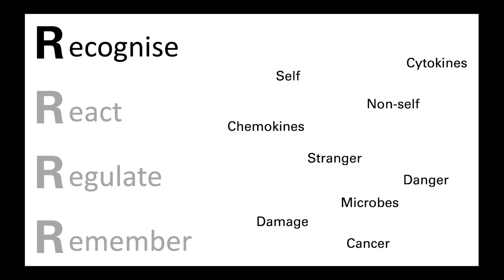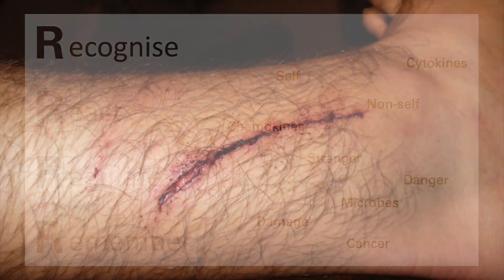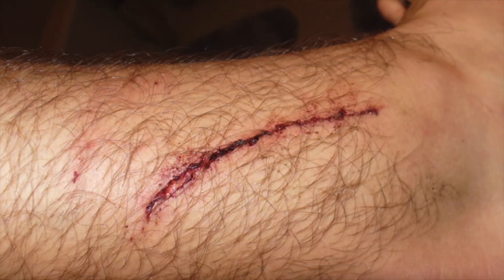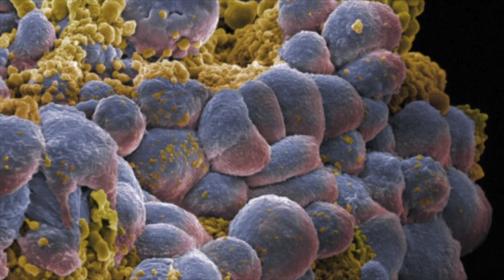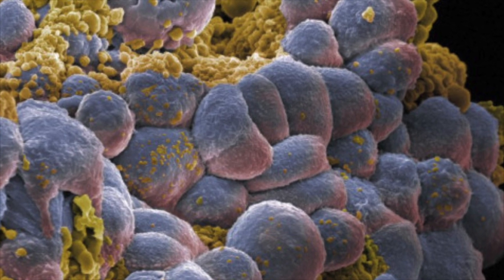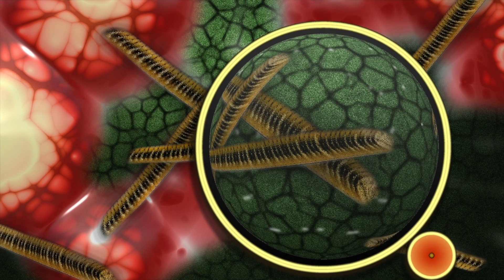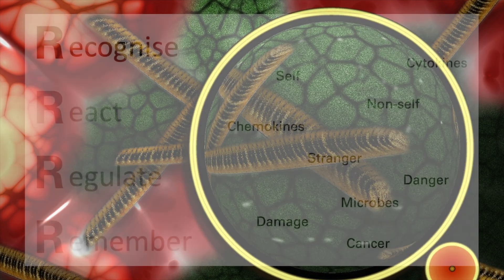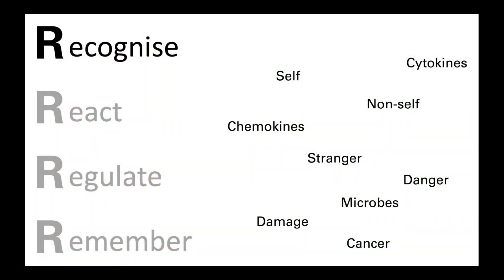Hence, if a self tissue becomes damaged due to a cut or burn, it must be repaired. Or if one of our own cells becomes cancerous, it needs to be removed, just as a pathogenic microbe needs to be destroyed. Supporting this activity is a network of soluble chemical messengers that help shape the immune response. These include cytokines, which direct the immune response, and chemokines, which help direct cells of the immune system to the site of insult.